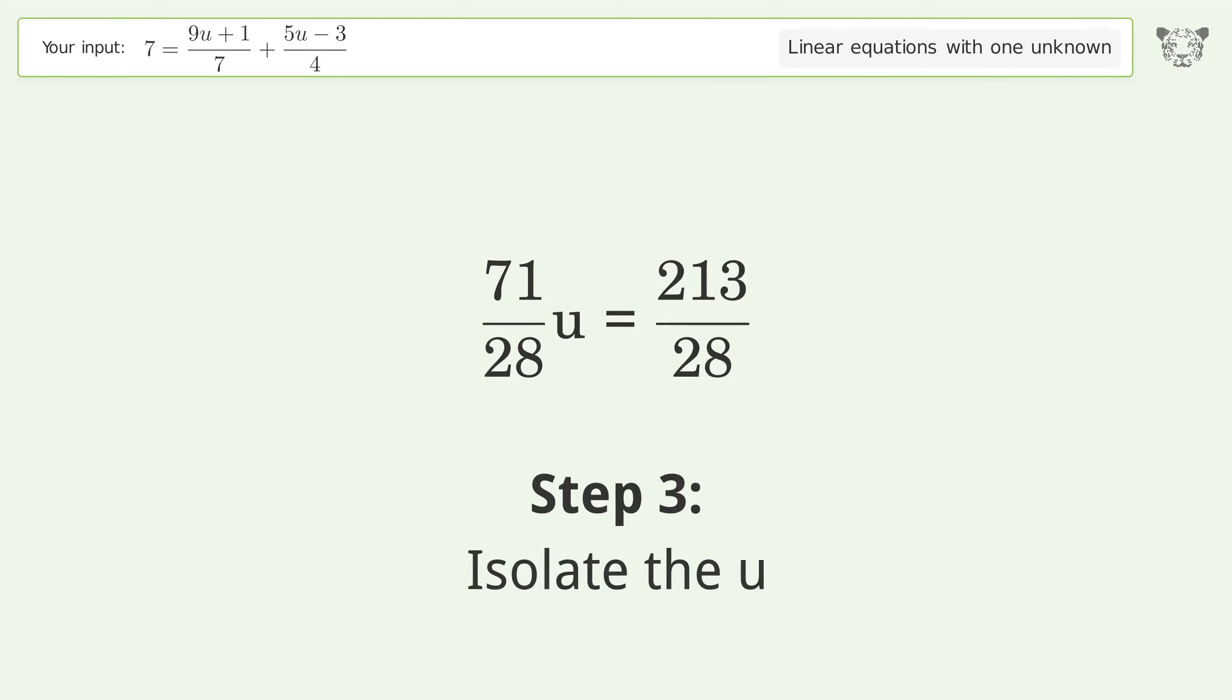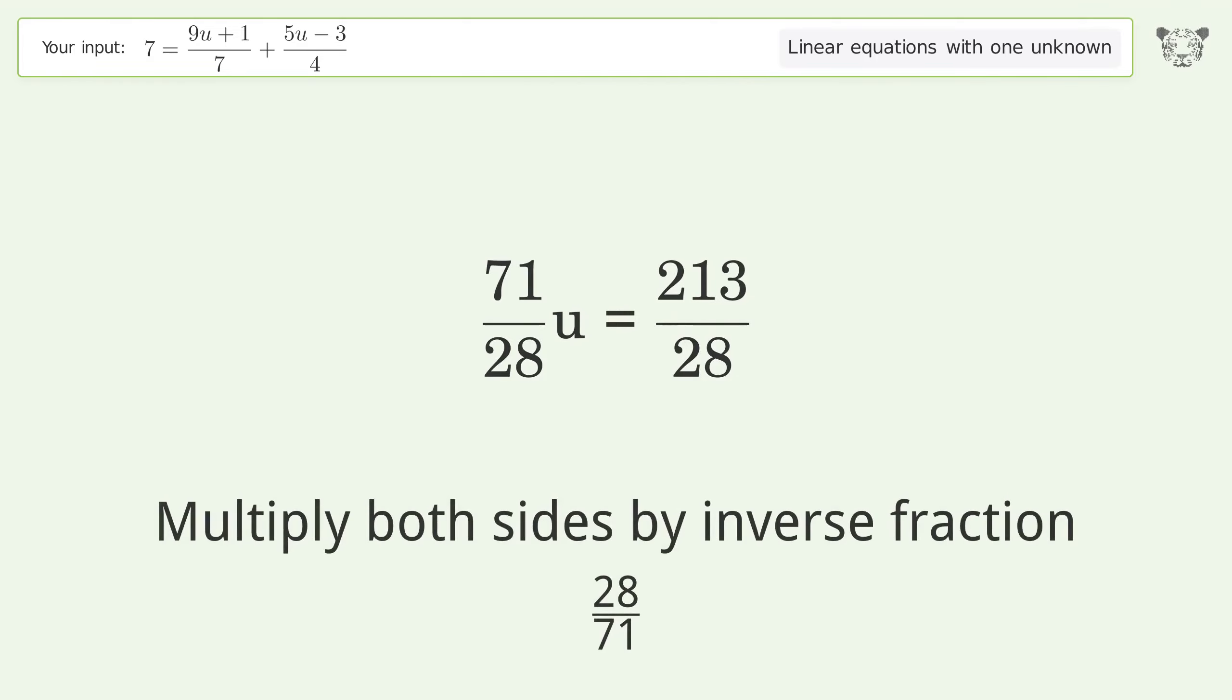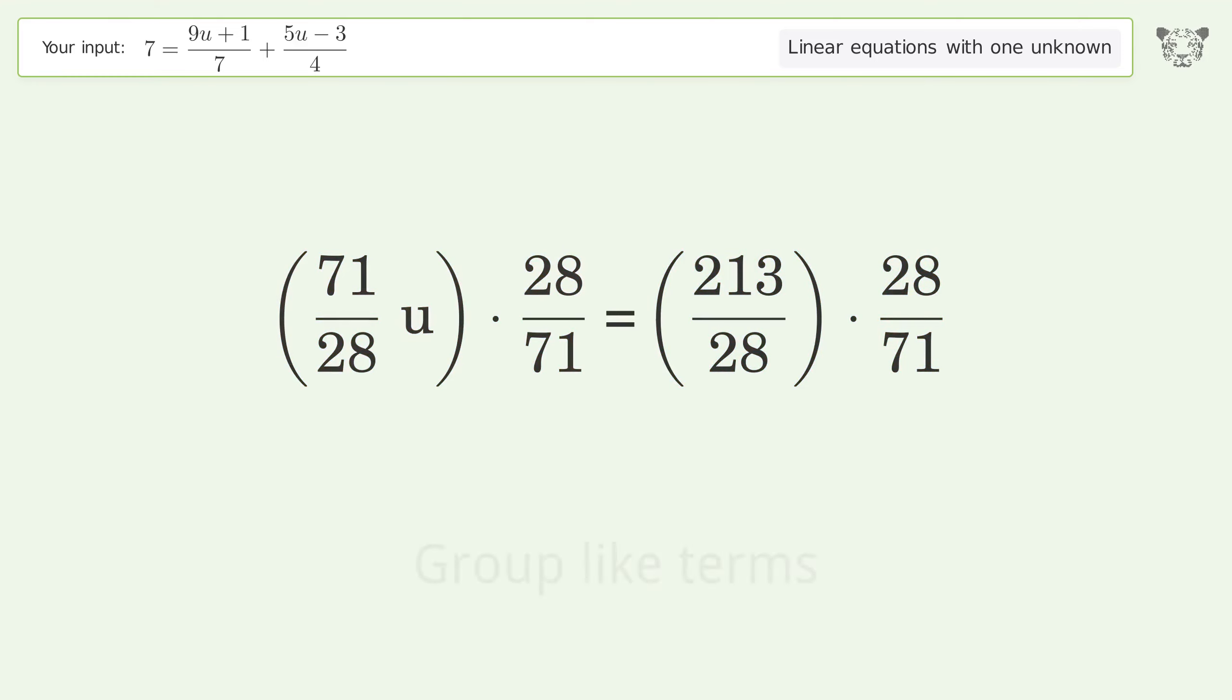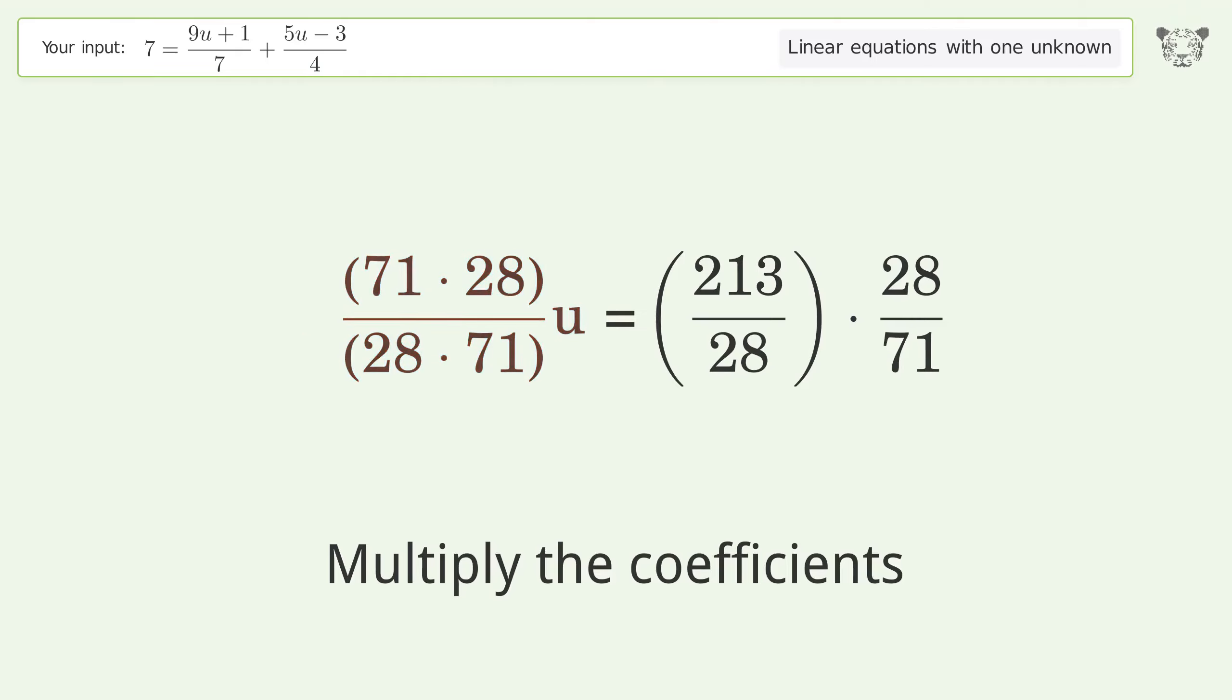Isolate the u. Multiply both sides by inverse fraction 28 over 71. Group like terms. Multiply the coefficients. Simplify the fraction.